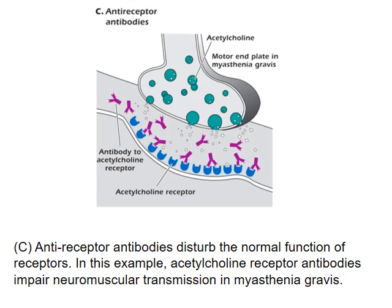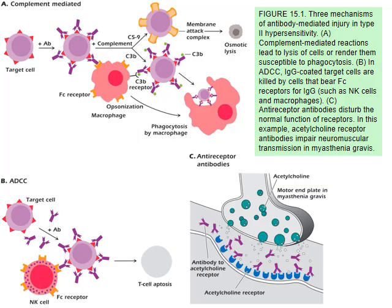Type 2 hypersensitivity summary: IgG is a powerful antibody with complement fixation ability. About 80% of your total immunoglobulins are IgGs — a big antibody with many functions, including antibacterial and antitoxin activity, and the only antibody to pass through the placenta. If IgG goes after your own cells — red blood cells, tissues, or receptors — you are in trouble. The three mechanisms are complement-mediated reactions, antibody-dependent cell-mediated cytotoxicity, and anti-receptor antibodies — all leading to type 2 hypersensitivity.